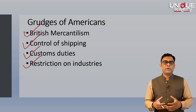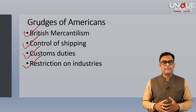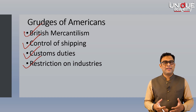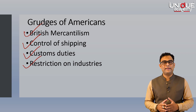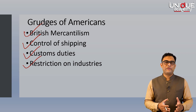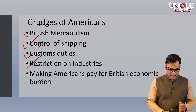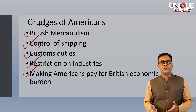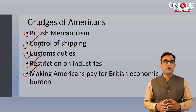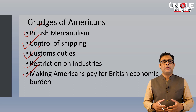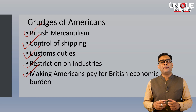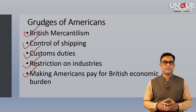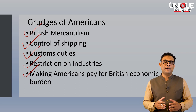Further, Britain, which was going through a rapid phase of industrialization, did not really want the colonies to industrialize. Colonists had developed interest in developing their own industries, which was being compromised by British regulations. After the Seven Year War, Britain had excessively increased taxation and given up on the earlier policy of salutary neglect. Americans saw this as making the colonies pay for Britain's war expenditure, which was resented by the colonies.